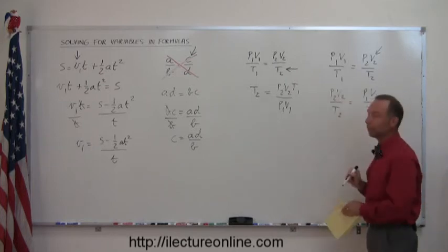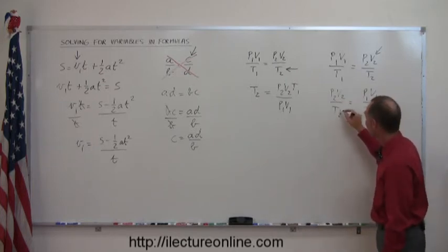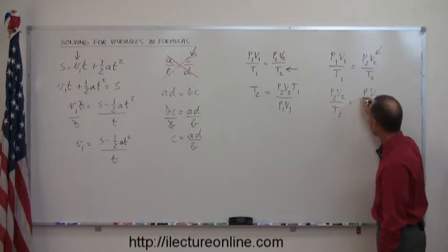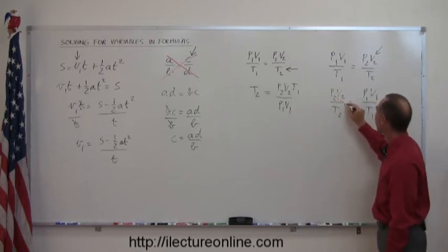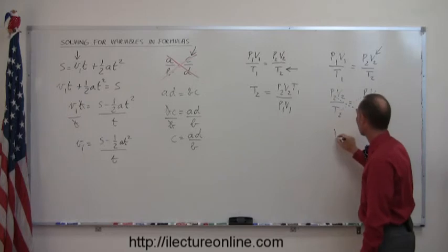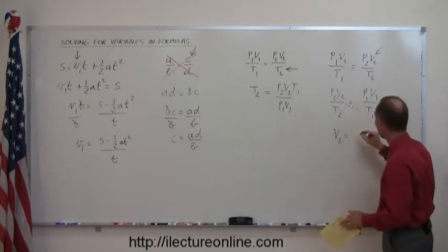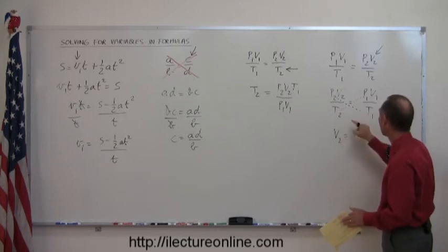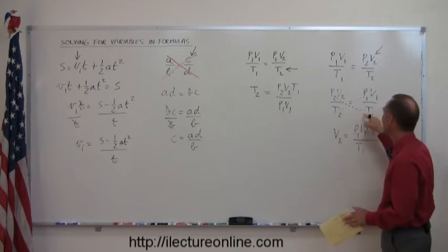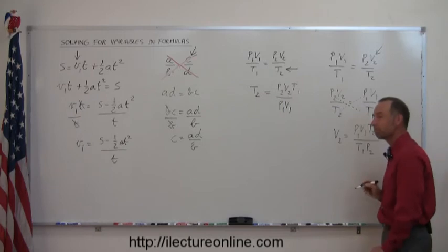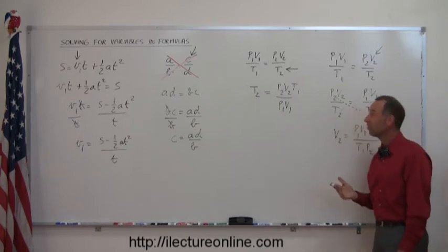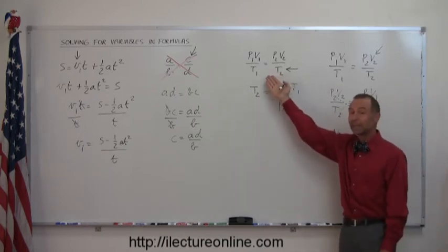Now I have v2 in the right place, so now all I have left to do is take the t2 and move it across diagonal, take the p2 and move it across diagonal. So I can write this as v2 equals p1 v1, move the t2 across which becomes t2 over here divided by t1 in the denominator, and then move the p2 down here multiplied by p2. So as you can see, things that look rather complicated can be relatively easy to solve for a particular variable.